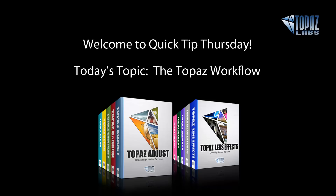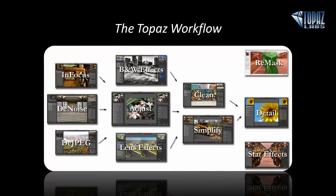Let's go ahead and take a look at all of our programs. I've kind of set up the Topaz workflow in a tier system starting from the left. So if you're going to be using InFocus, Denoise, or DJPEG, you're going to need to use those as part of your workflow first. The reason being is the other programs within our lineup are actually going to negatively affect what you might be trying to correct with InFocus, Denoise, or DJPEG.